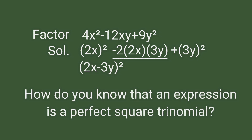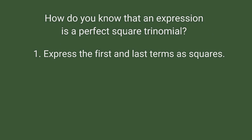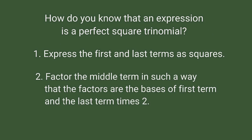How do you know that an expression is a perfect square trinomial? Express the first and last terms as squares, then factor the middle term such that the factors match the first and last terms times 2. If we can do this, then the expression is a perfect square trinomial. If it cannot be done like that, then it's not a perfect square trinomial.